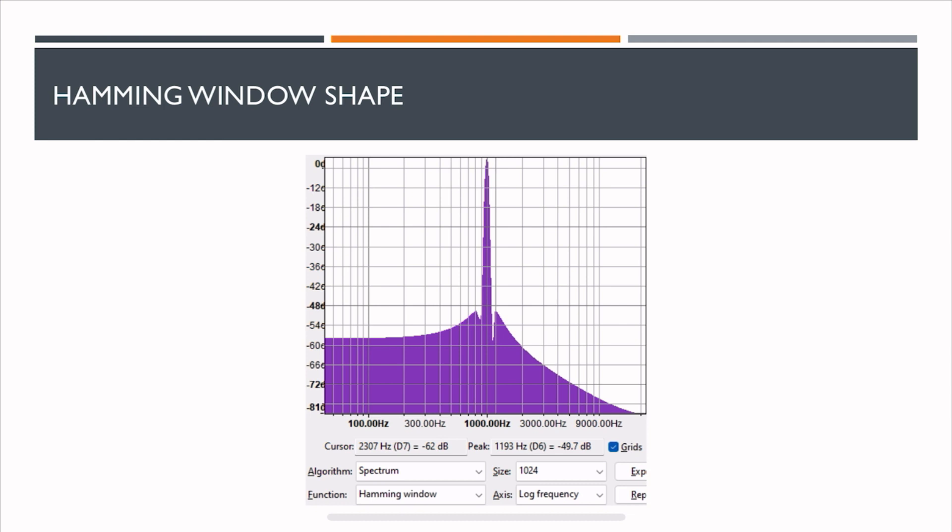This is how a Hamming window looks like. You do see that when comparing this to the Hann window, the spectral leakage is higher.